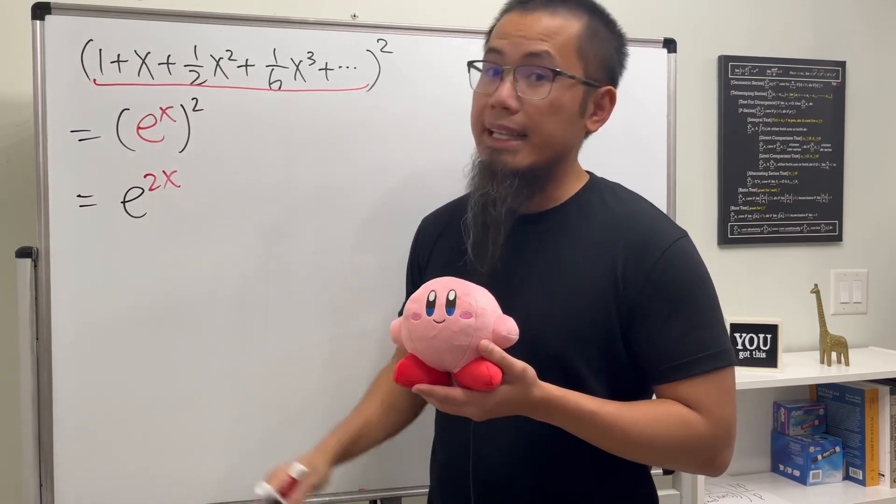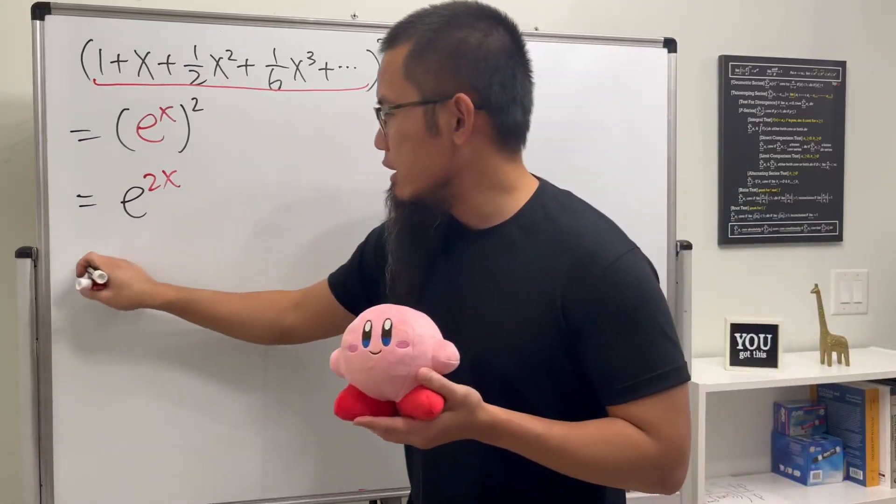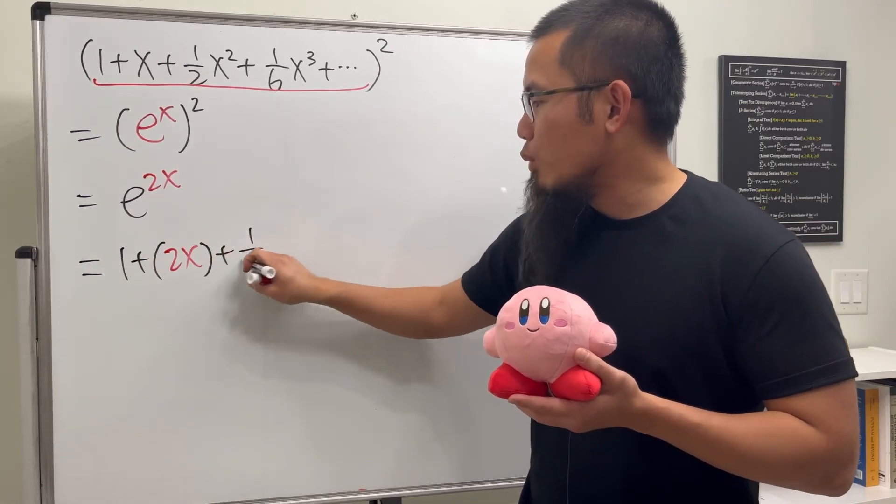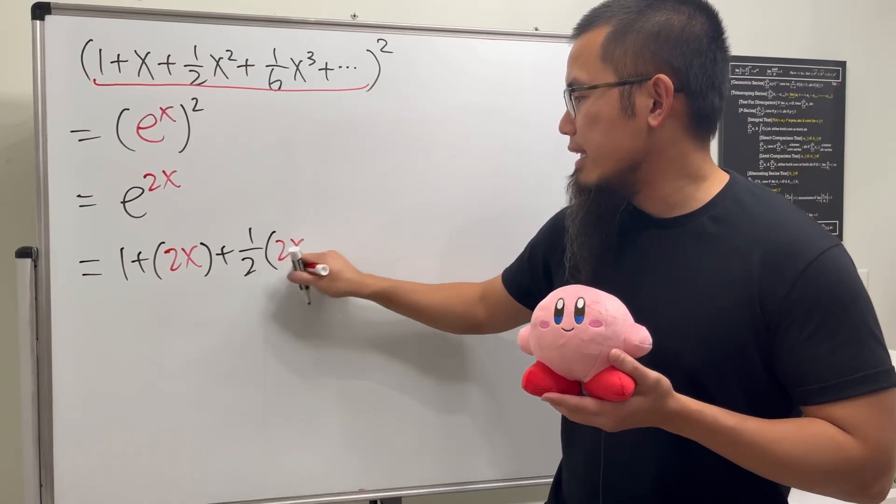This is just equal to e to the 2x, and then we can use the power series again. So this is equal to 1 plus the next term is going to be 2x, and then we will have to add 1 over 2 factorial, which is 1 over 2, and then multiply by 2x and raise to the second power.